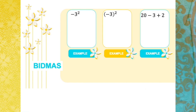Now consider -3². Why do we need brackets? Without brackets, according to BIDMAS, the index is performed before the negation. So -3² means negative times 9, which equals negative 9.